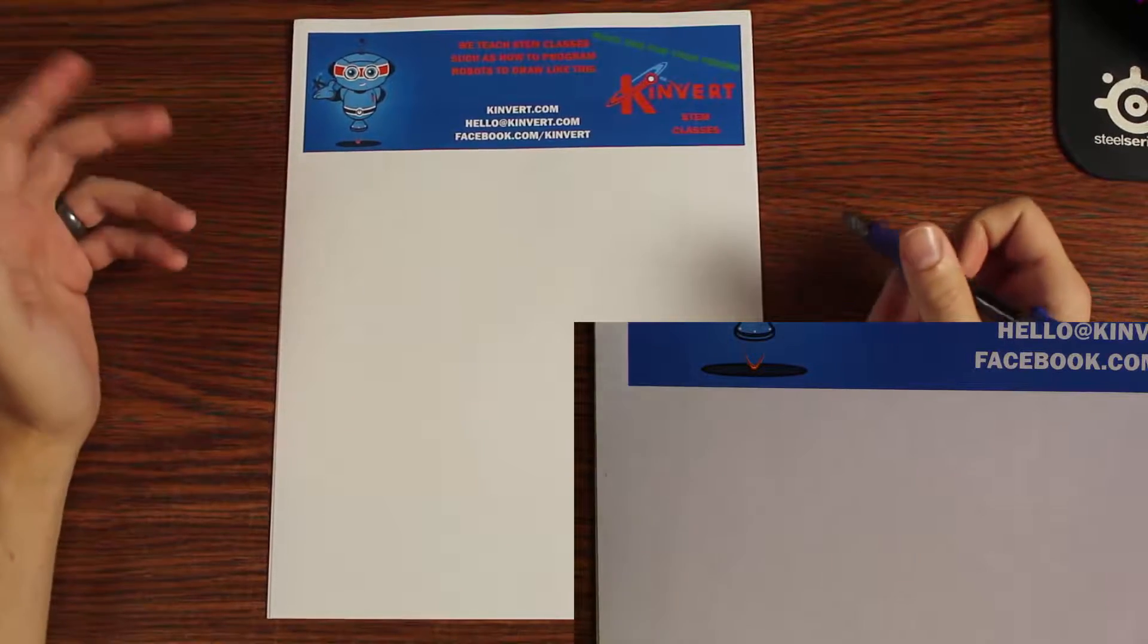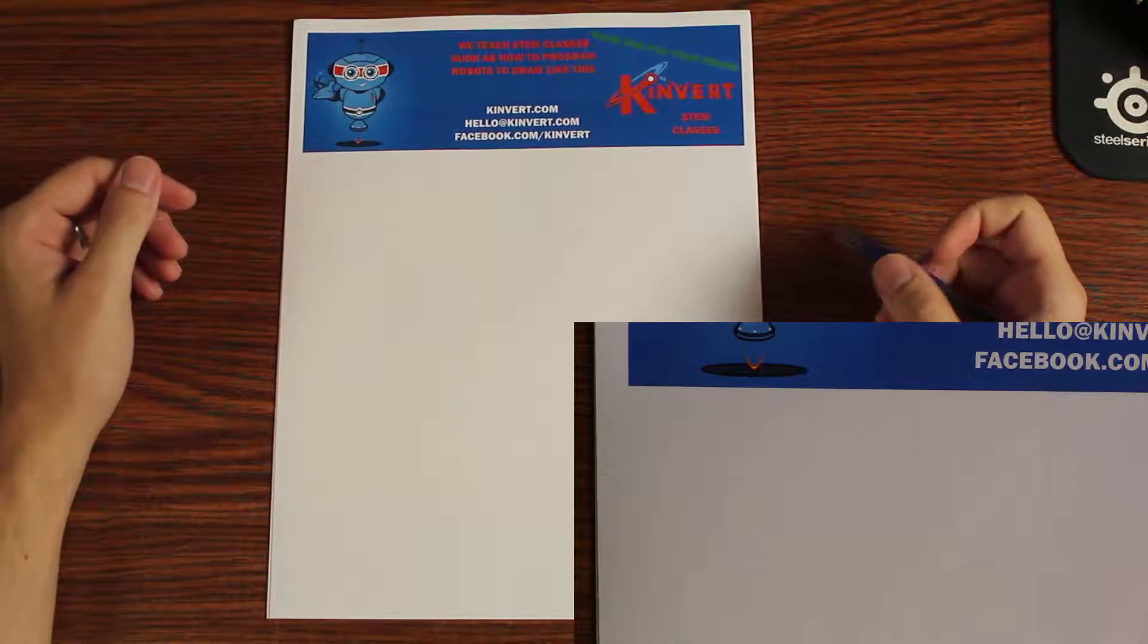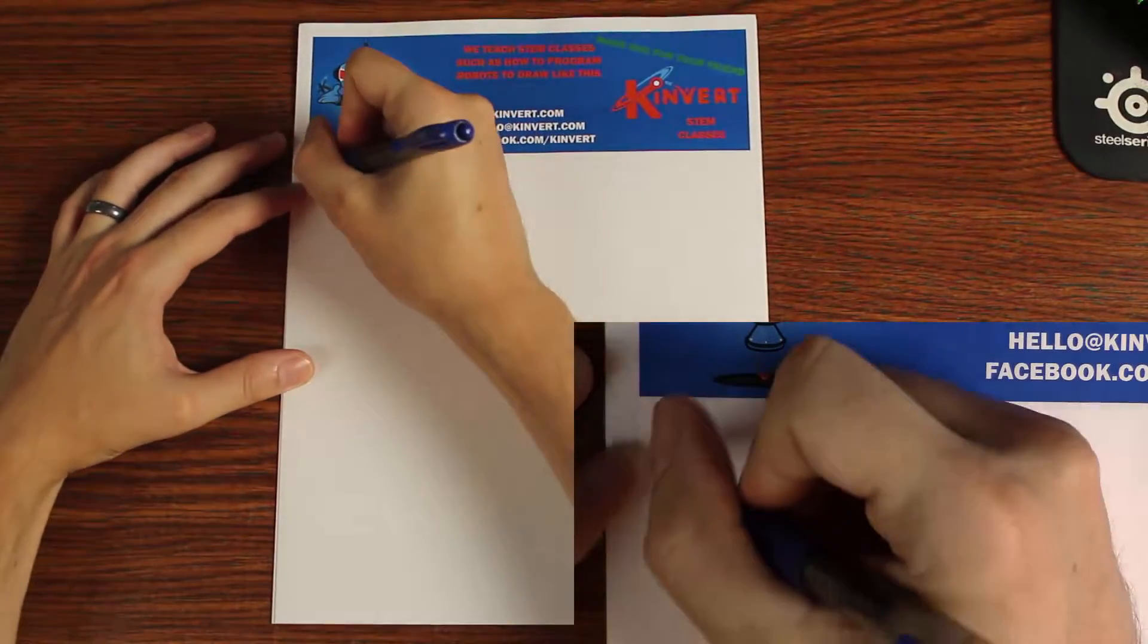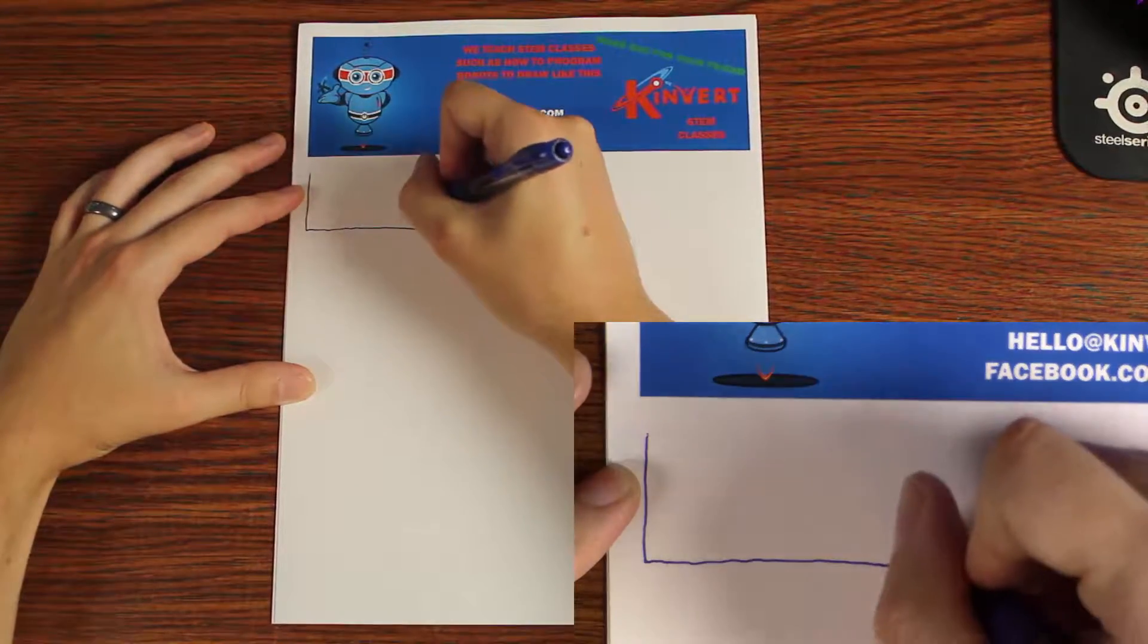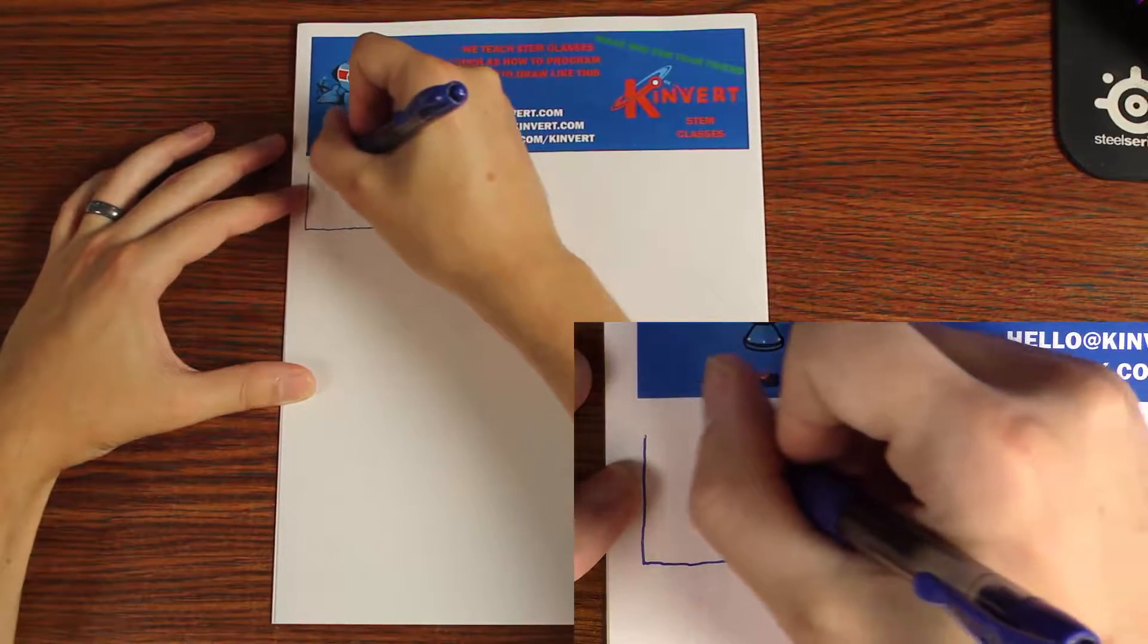So I really like these YouTube riddles and puzzles and different things, and I saw a pretty cool one today where there was a rectangle with known sizes and two circles inside of the rectangle.